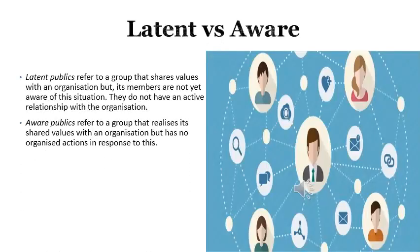Latent publics refer to a group that shares values with an organization, but the members are not yet aware of the situation and so they do not have an active relationship with this organization. Aware publics, on the other hand, refer to a group that realizes it shares values with an organization but also has no organized action or response to this. The basic difference between latent publics and aware publics is that with aware publics, they are conscious of their relationship with the organization.